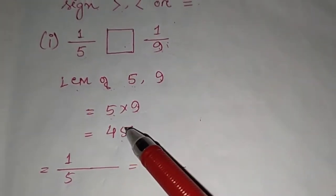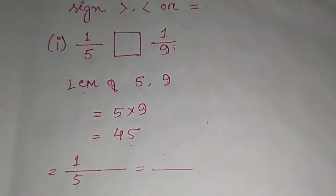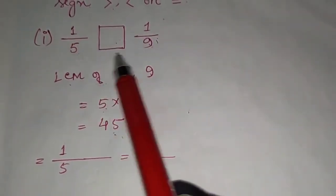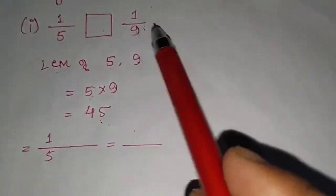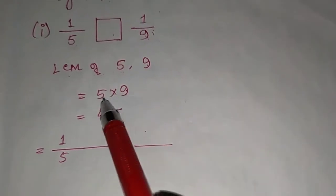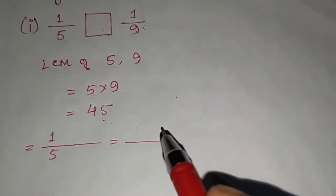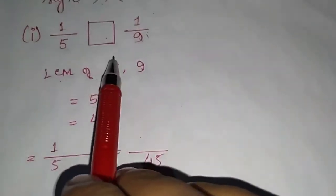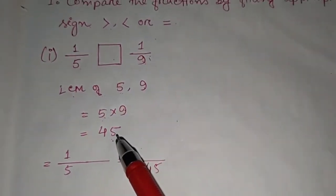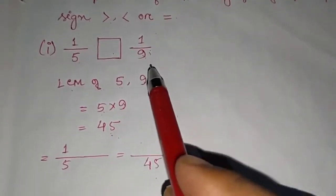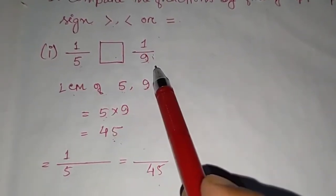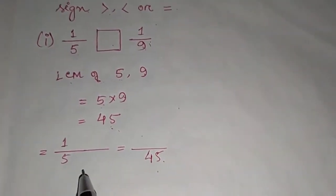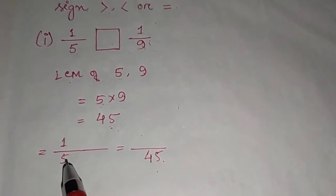5 × 9 = 45, so our LCM is 45. Now we have to make 45 the denominator of both fractions. Our denominator is now 45 for both fractions.